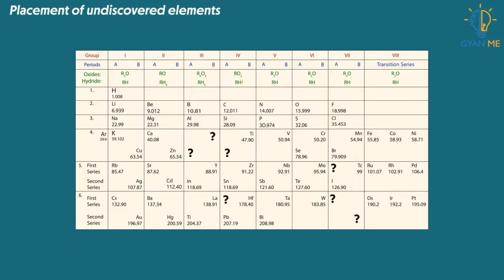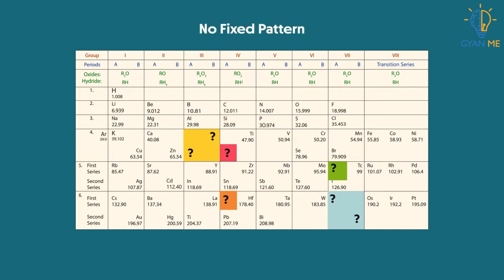Thus, the placement of undiscovered elements was another problem with Mendeleev's table, as there was no fixed pattern of arranging elements here.